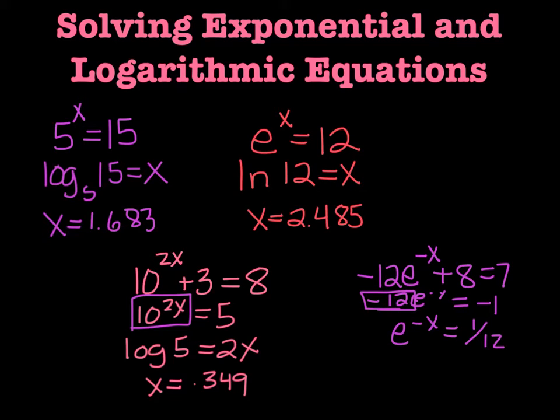Then I can take the logarithm, in this case the natural log of 1 twelfth equals the exponent negative x. So I take the natural log of 1 twelfth and I negate it, and I will get x equals 2.485. Make sure you isolate your exponential, in this case e to the negative x needs to be isolated before you can do the logarithm.